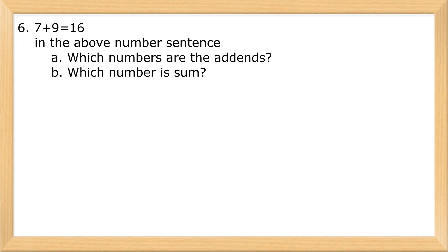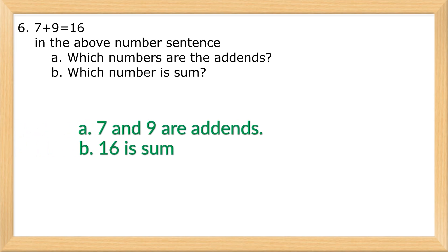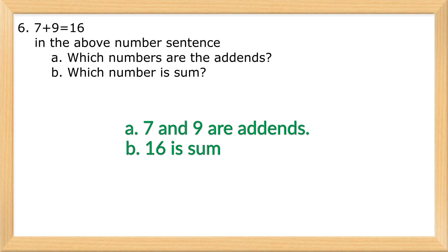Number sentence exercise: a) Which numbers are the addends? b) Which number is the sum? Answer: a) Seven and nine are the addends. b) Sixteen is the sum.